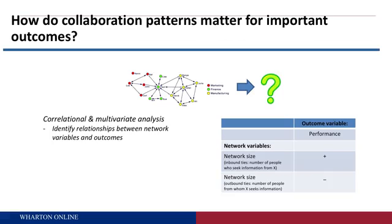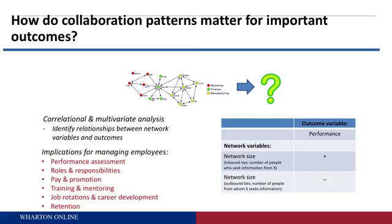Being able to evaluate how network building blocks are associated with performance outcomes is a critical step toward intervention. This may involve correlational analysis or, more sophisticated, multivariate analysis where you control for some variables and look at the effects of others on outcomes. The management implications are wide-ranging: performance assessment, roles and responsibilities, pay and promotion, training and mentoring, job rotations and career development — giving people opportunities to grow their networks if that's associated with better performance — and even retention, such as identifying people at risk of burnout who many others rely on for advice.